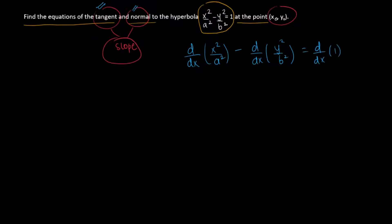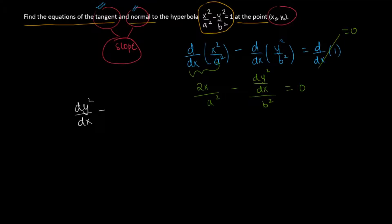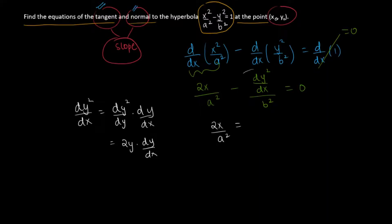The right-hand side derivative of a constant is always equal to zero. On the left-hand side, the derivative of x squared is 2x, divided by a squared (a constant), minus the derivative of y squared over b squared. Since b squared is also a constant, by the chain rule: dy squared over dx equals dy squared over dy times dy over dx, which gives 2y times dy/dx. So we have 2x/a² = 2y/b² times dy/dx.